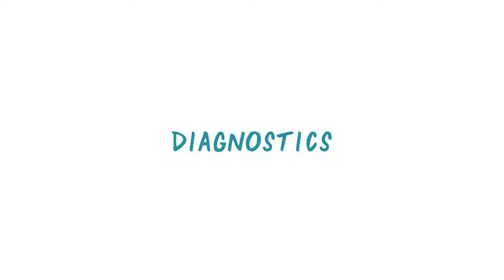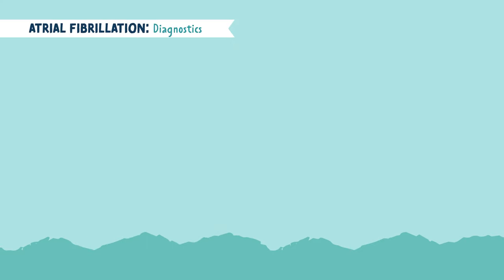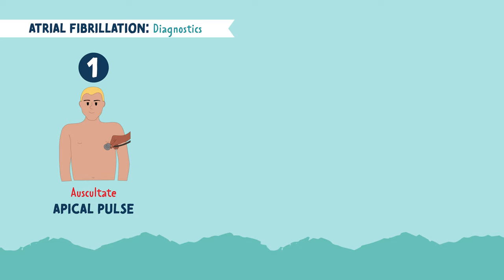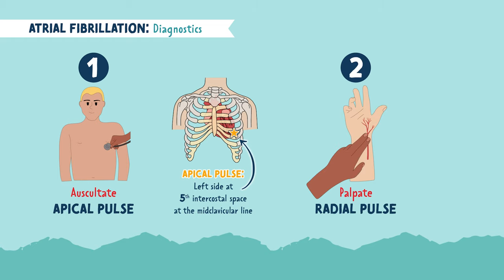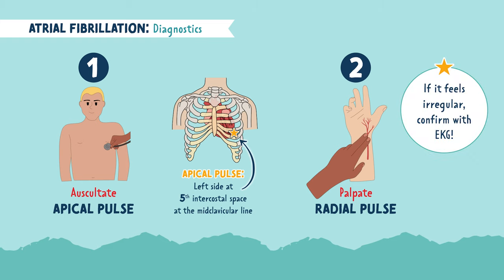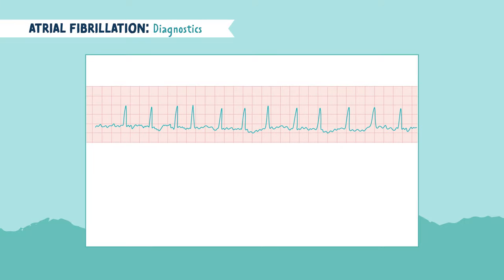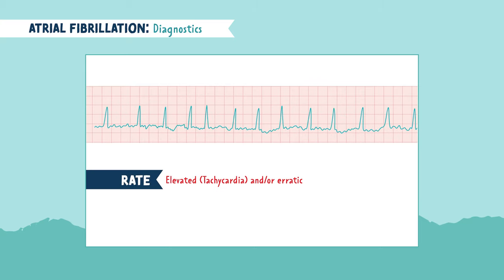Let's talk about how to diagnose atrial fibrillation. The rhythm can be suspected by auscultating an apical pulse, located at the left side of the chest at the fifth intercostal space midclavicular line, or just by palpating a radial pulse. If either of these feel irregular, you're going to want to confirm with an EKG. On an EKG rhythm strip, AFib will look just as erratic as it sounds. The classic telltale sign is irregular R-to-R intervals. The rate will most likely be high tachycardia, and you may find that the heart rate bounces around, shooting into the high hundreds or even higher, and then dipping back into normal ranges right away.